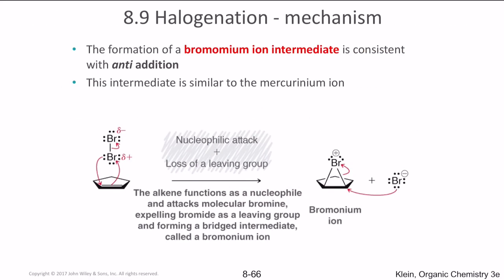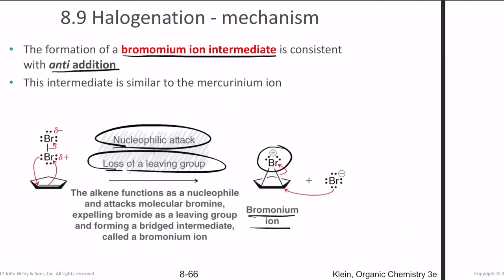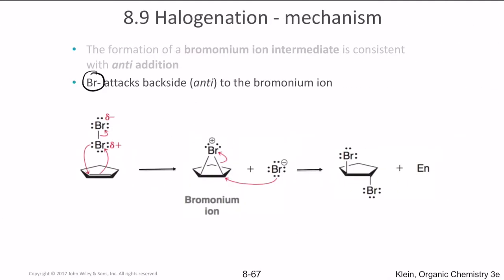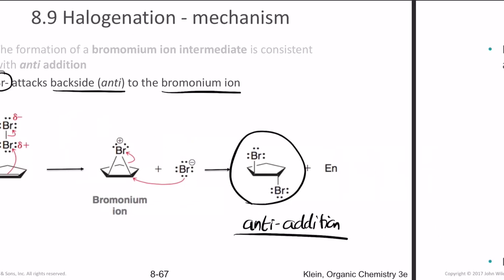The formation of a bromonium ion intermediate is consistent with anti-addition. The bromonium ion is where bromine attaches itself to both carbons. The two processes involved are nucleophilic attack and loss of a leaving group. The bromine then attacks backside to the bromonium ion, resulting in the formation of the anti-addition product.